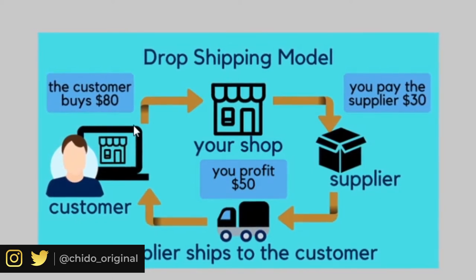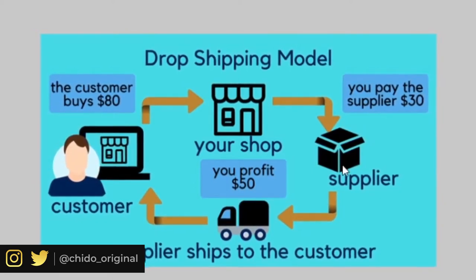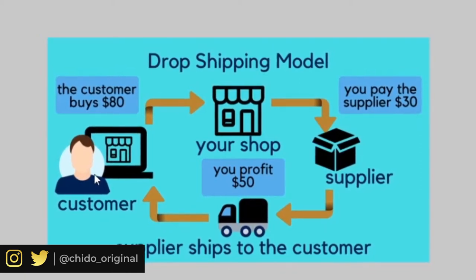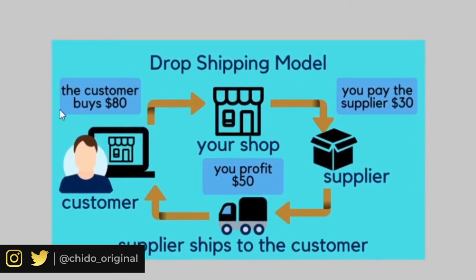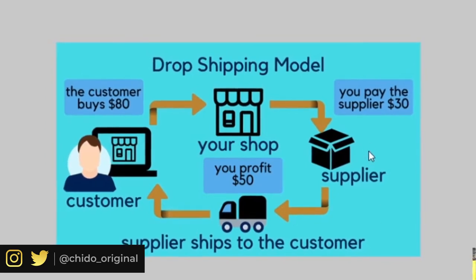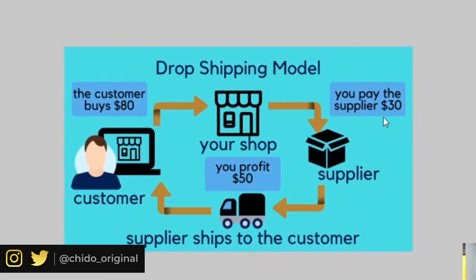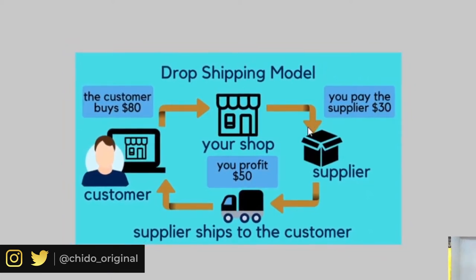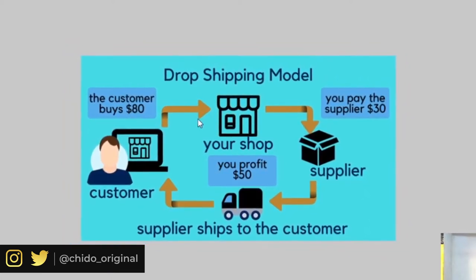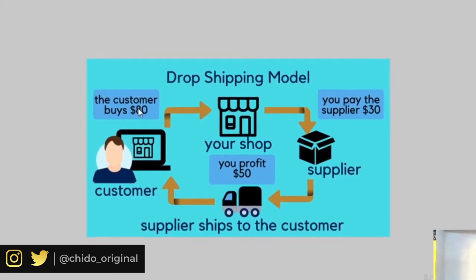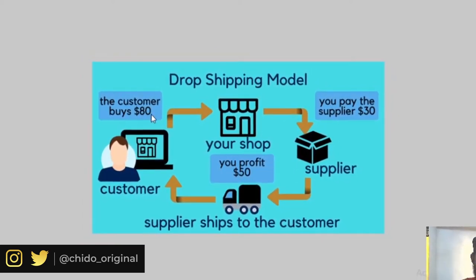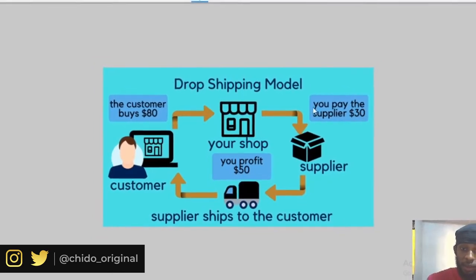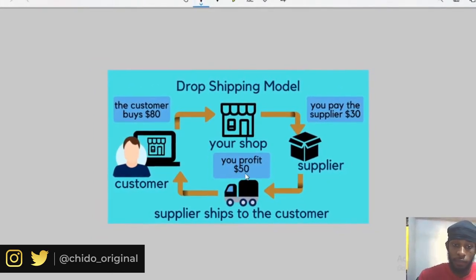The customer orders an item, you message the supplier to issue the item to the customer. You make a profit. Let's say the item goes for $80 on your shop, but you are buying from the supplier at $30. So you are making a profit of $50.